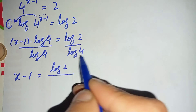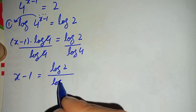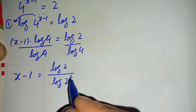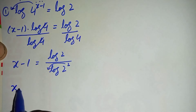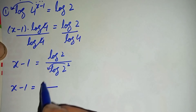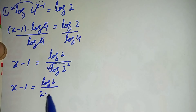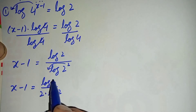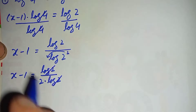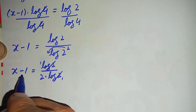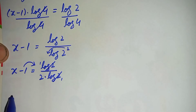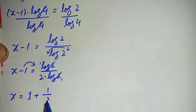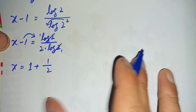To eliminate log of 4, we divide both sides by log of 4. On the right side we can write 4 as 2 raised to power 2, giving log of 2 raised to power 2. Shifting the power 2 to the front, this becomes x minus 1 is equal to log of 2 divided by 2 times log of 2. We cancel log of 2 with log of 2, leaving 1 over 2.